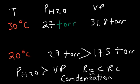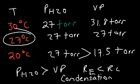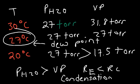Somewhere between 20 and 30 degrees — let's say around 27 degrees, though it may not be exact — at some point the vapor pressure of water will equal the partial pressure of water. At that point, the rate of evaporation equals the rate of condensation. If you decrease the temperature any lower, condensation will begin, and that temperature will be the dew point. The temperature at which condensation just begins to occur is the dew point — that's when you start seeing fog and liquid condensing on surfaces. That's one way you can measure the dew point: decrease the temperature of the air until you begin to see condensation occurring; at that temperature, that is the dew point.